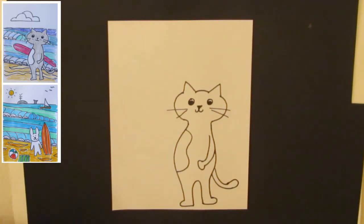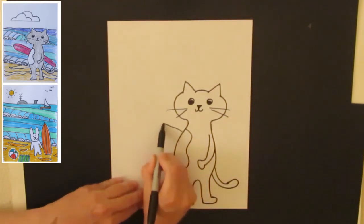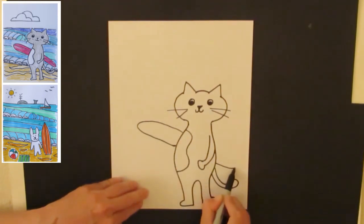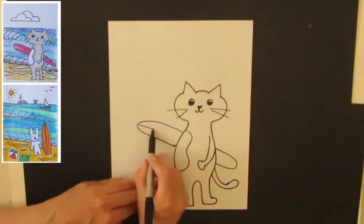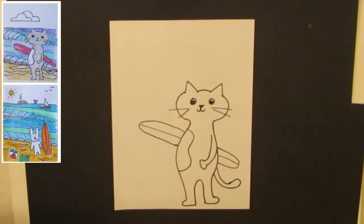Once you have your character, you can decide if he's going to be carrying a surfboard or a surfboard's going to be on his side. I'm going to have mine carrying a surfboard. So I draw a big oval-y shape on either side. There it is.